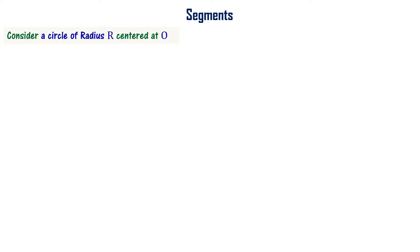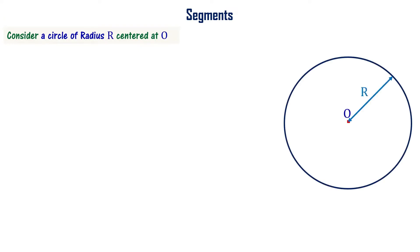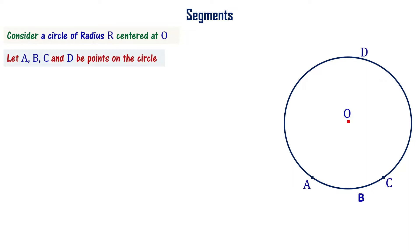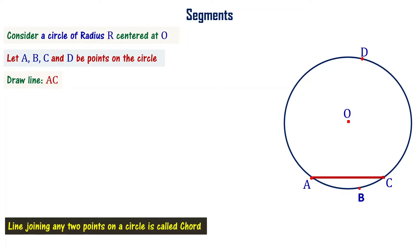This video is going to cover a segment of a circle of radius r centered at O, as shown in the figure. Let me mark points A, B, C, and D on the circle. Now let me connect line AC — meaning I want to connect two points A and C. A line joining two points on the circle is called a chord. So line AC is a chord.